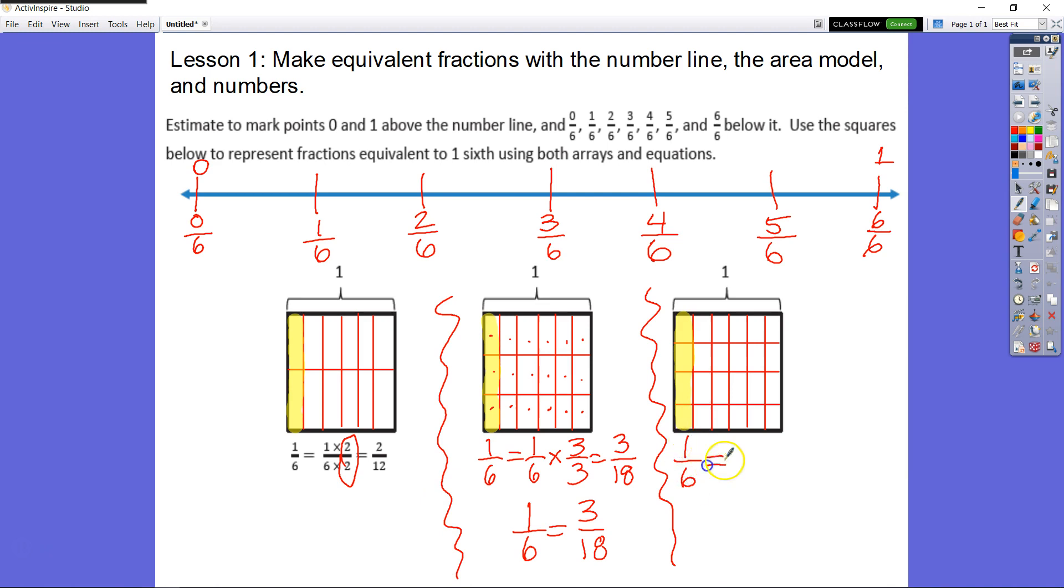We have 1/6 is equal to 1/6 times, we split it into, each one into fourths. So we have 4/4 equals 4/24. All right, so we know that 1/6 is equal to 4/24.